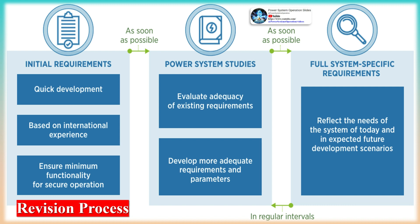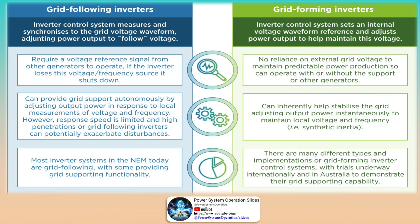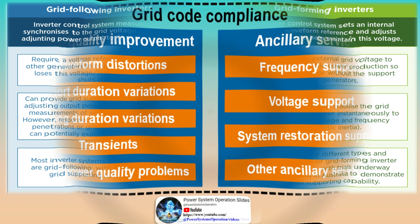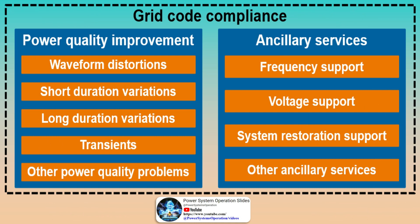Traditional power systems are composed of largely conventional synchronous generators — large, centralized dispatchable assets contributing to system inertia and feeding large amounts of power into the transmission grid. Electricity systems are changing, however, and the optimal generation mix now comprises diverse generation assets that can be distributed, located closer to consumers, and decentralized in operation. Renewable generation technologies, most of which can only generate when the primary resource is available, are sustainable and cost-effective. Solar PV and wind power generators, which are VRE sources, are now mature technologies expected to grow exponentially in installed capacity.